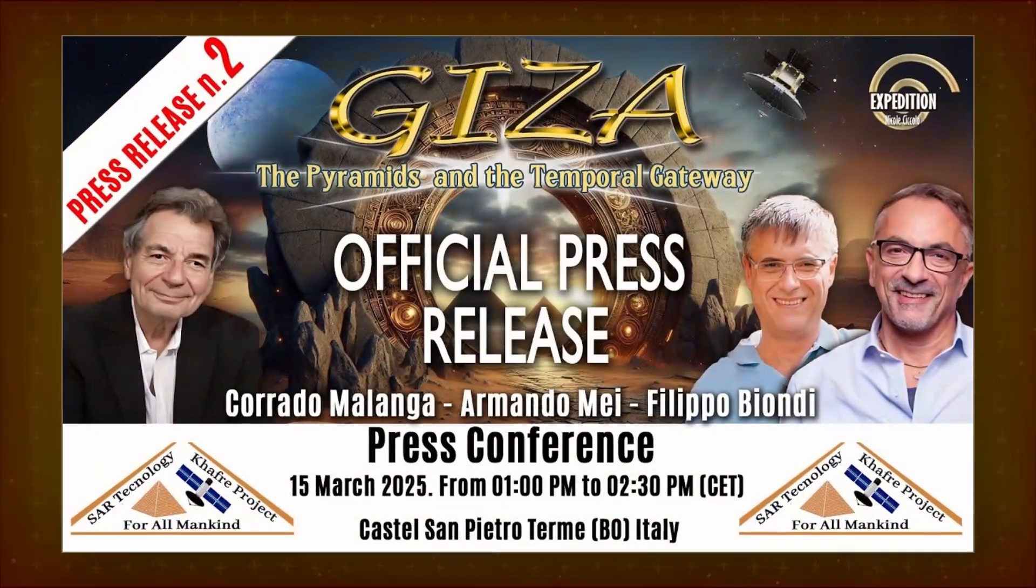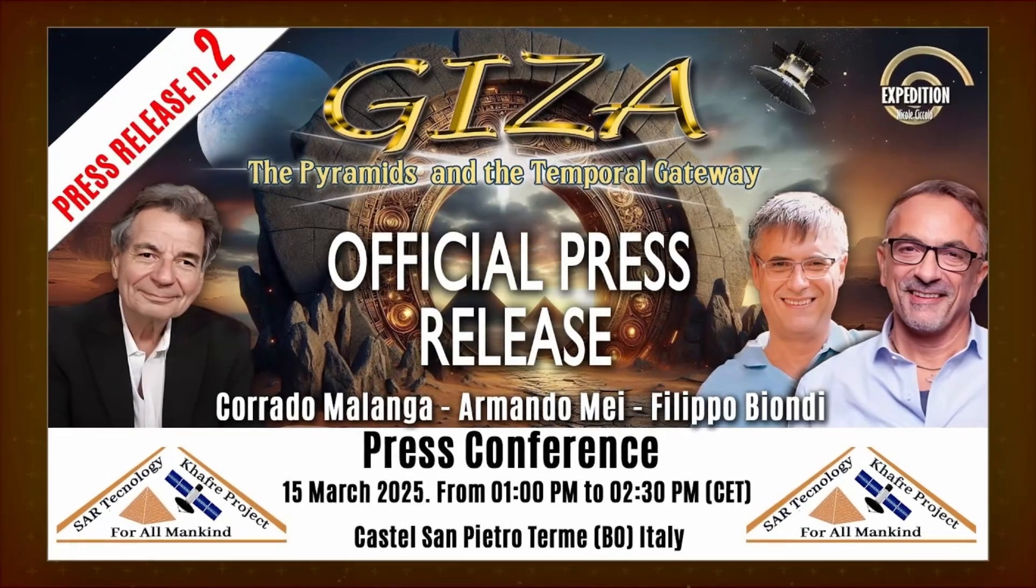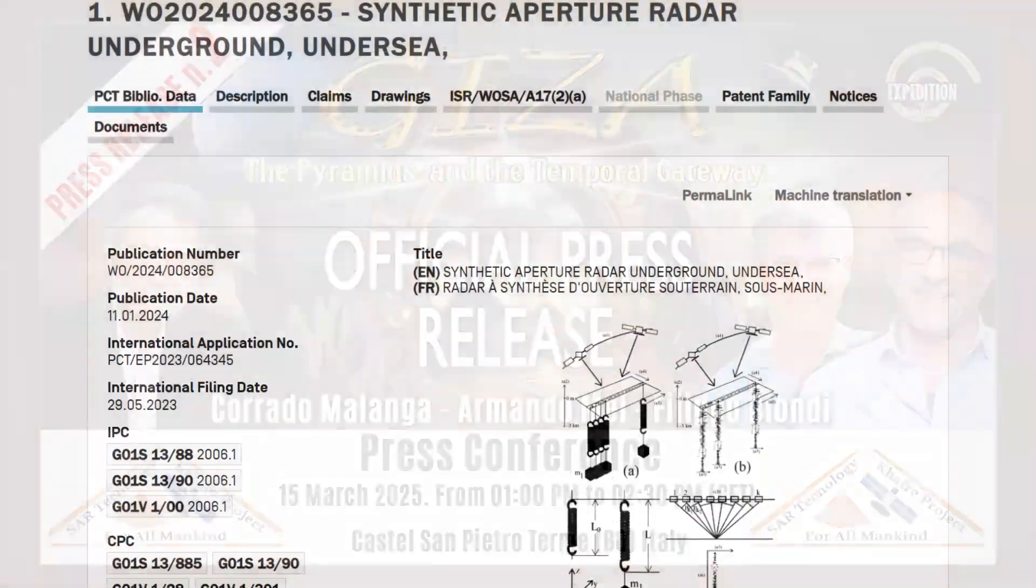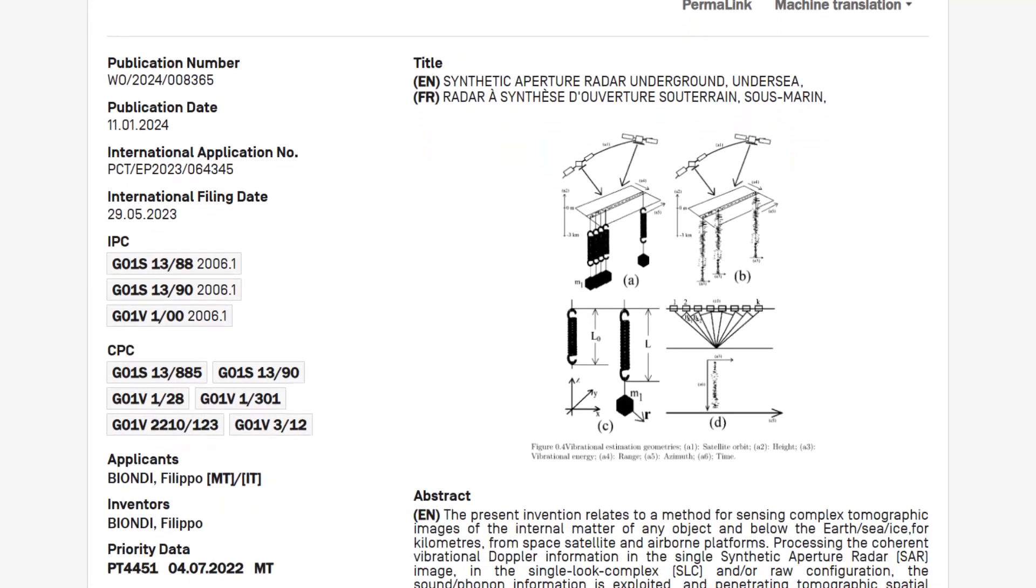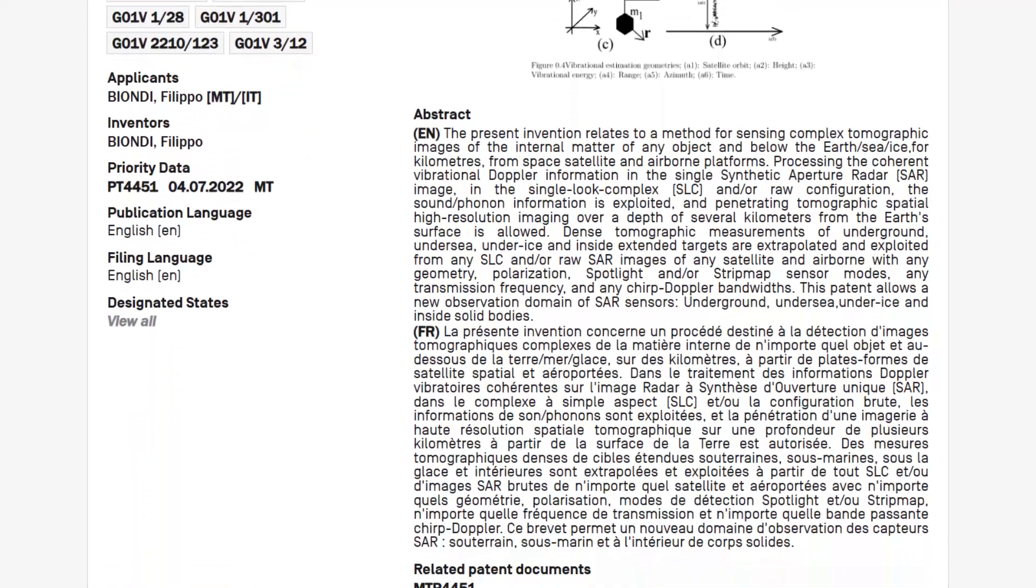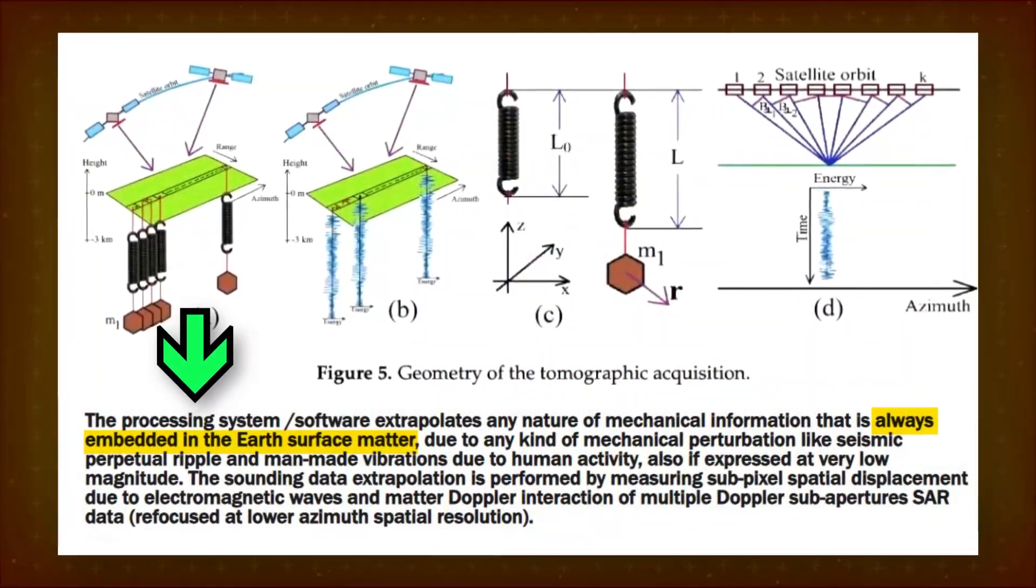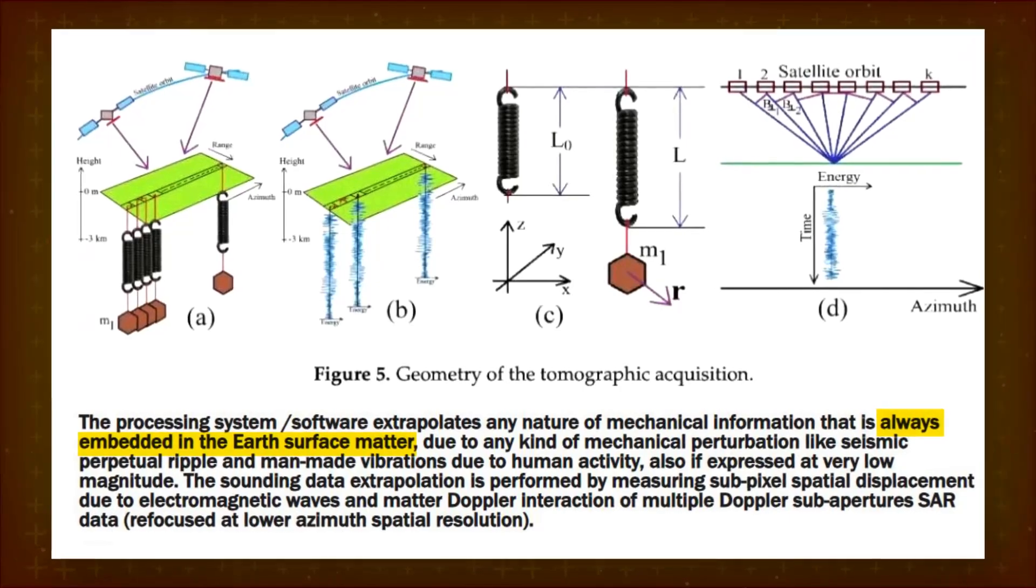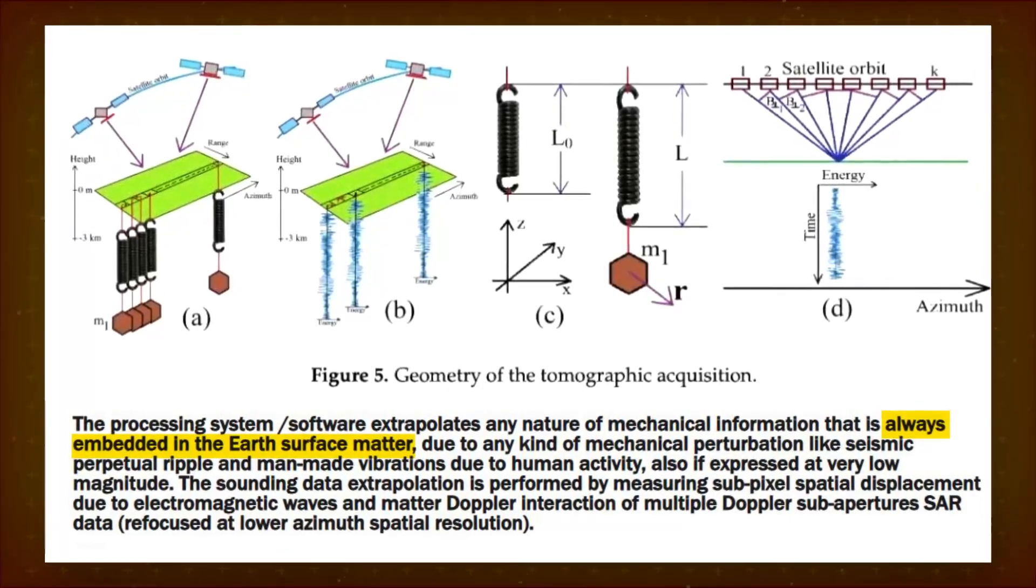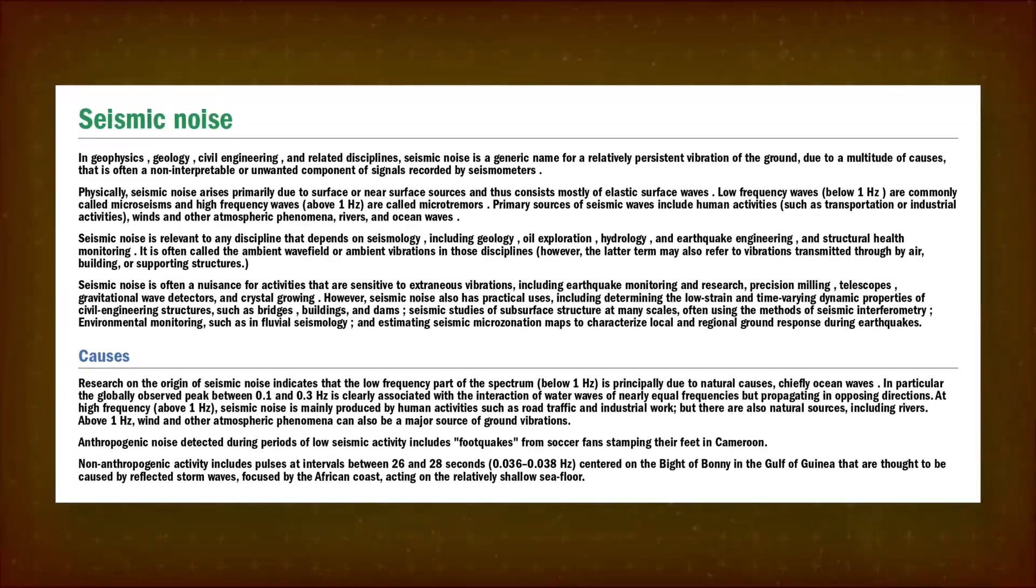MBM proposed two different mechanisms for how their SAR technique supposedly detects underground structures. In their patent, they claim that naturally occurring tiny vibrations in the ground are what allow them to image underground cavities. These vibrations come from natural and human sources like distant ocean waves, wind, traffic, and urban activity. Basically background seismic noise, always present in the ground.